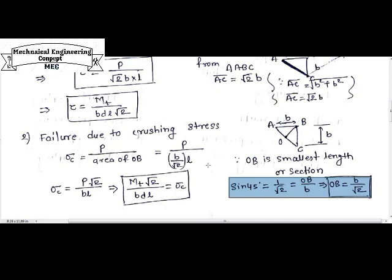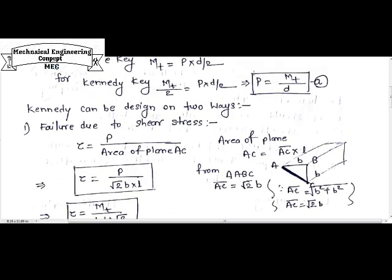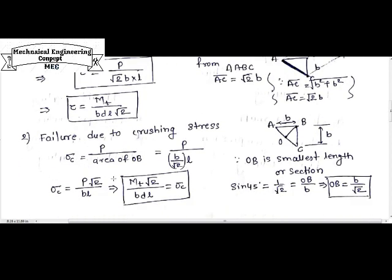So we know that this crushing stress will occur throughout the key length. So multiply resisting area OB into L, which will come out as B by root 2 into L. Crushing stress is P by B by root 2 into L. Putting the value of P from equation number 1, we can conclude that sigma C is equal to MT root 2 by BdL. From this equation and from shear stress equation we can calculate the dimension of the shaft and we can check the stress values, whether the component will be safe or not.